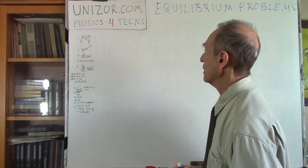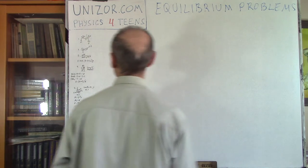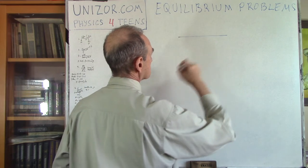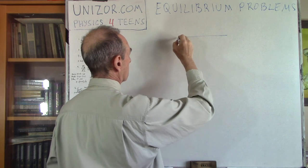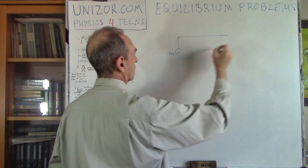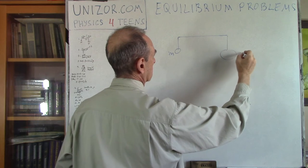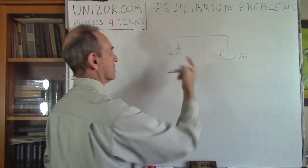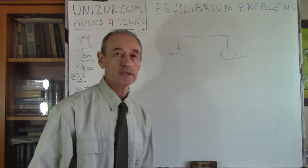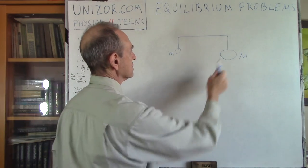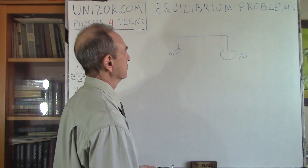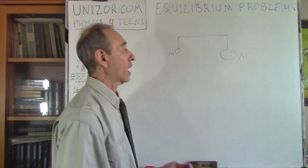Let's talk about problems on equilibrium. The first problem is really very easy. You have a weightless rod and you have two masses, m and M. M is bigger than m, obviously. The rod is weightless, so the weight is concentrated only in these two masses. You can consider them to be basically point objects.